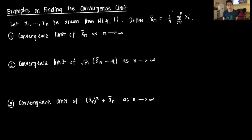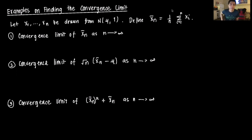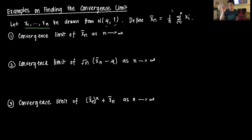Hi everyone and welcome to this video on various examples on finding the convergence limit or the asymptotic limit of various expressions. We're going to go through a couple of examples to reinforce the theories we've learned so far. Our main example will have four items. For all four items, consider the sequence x₁ to xₙ drawn from a normal distribution with an unknown mean but a known variance equal to one. We're going to be focusing on the sample mean x̄ₙ.